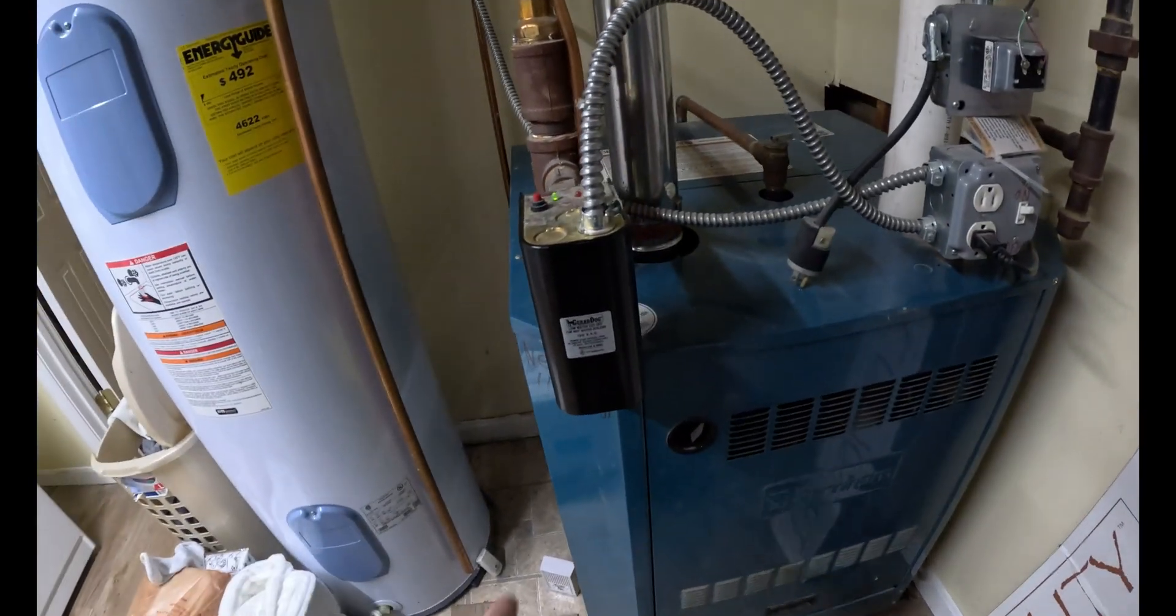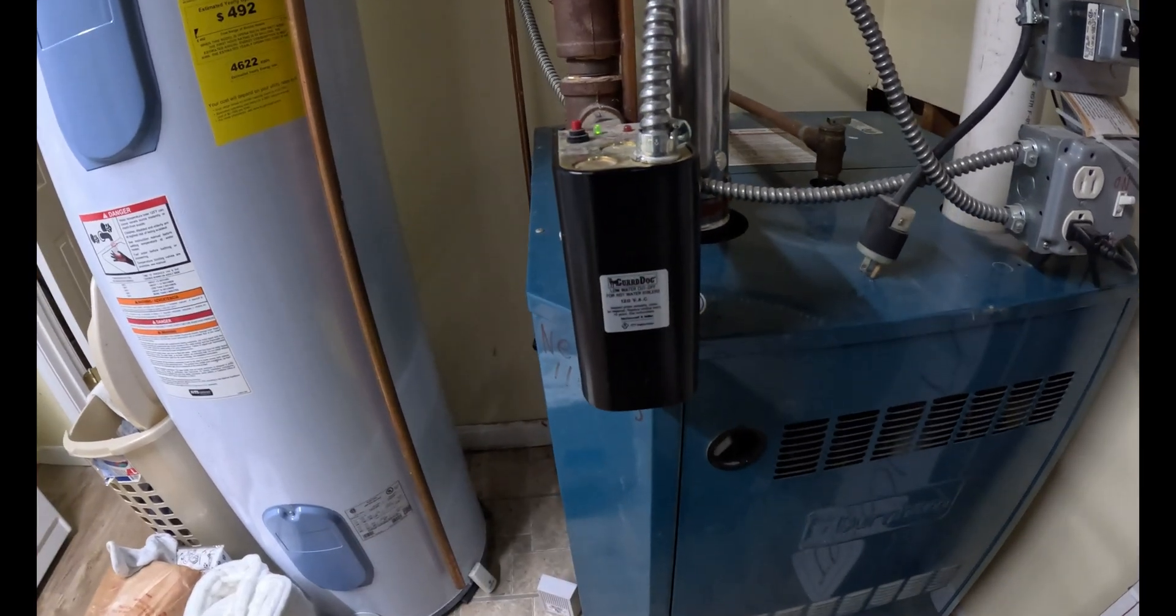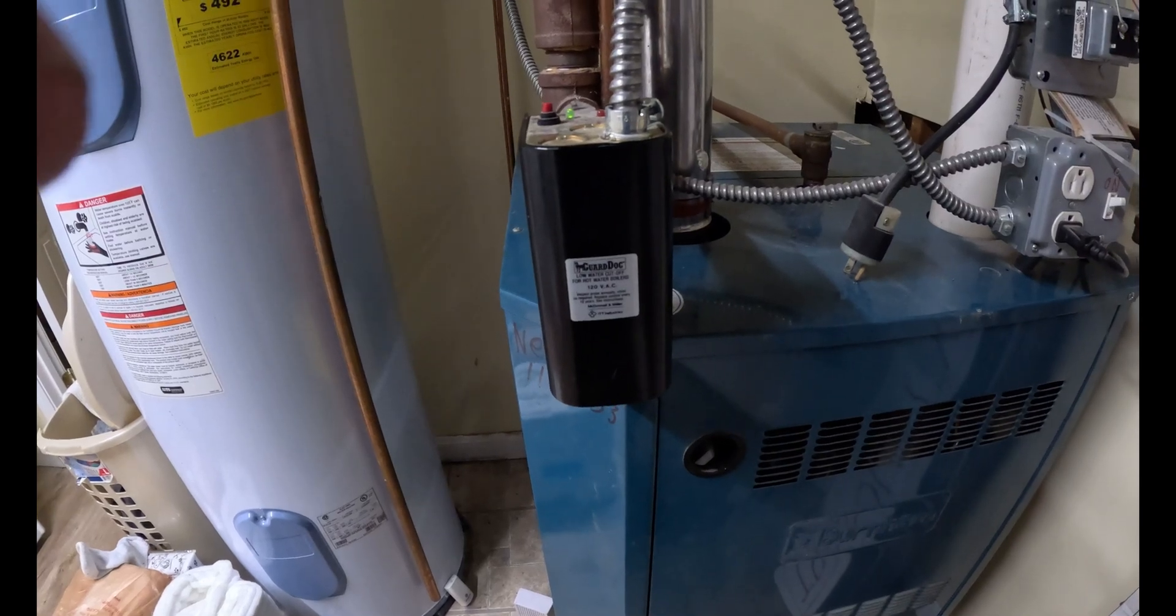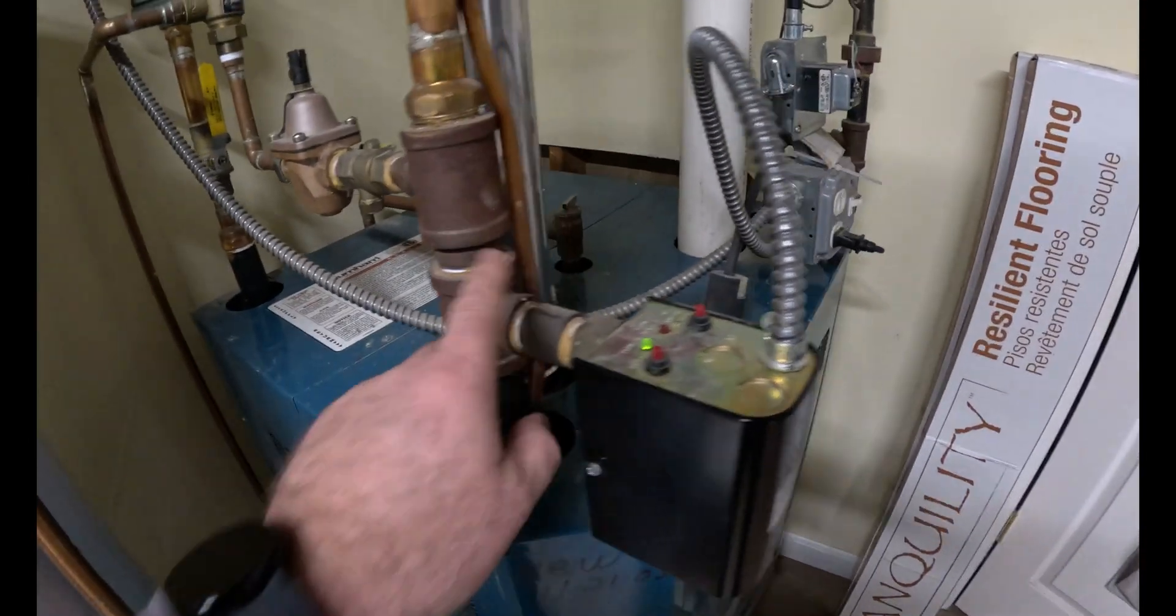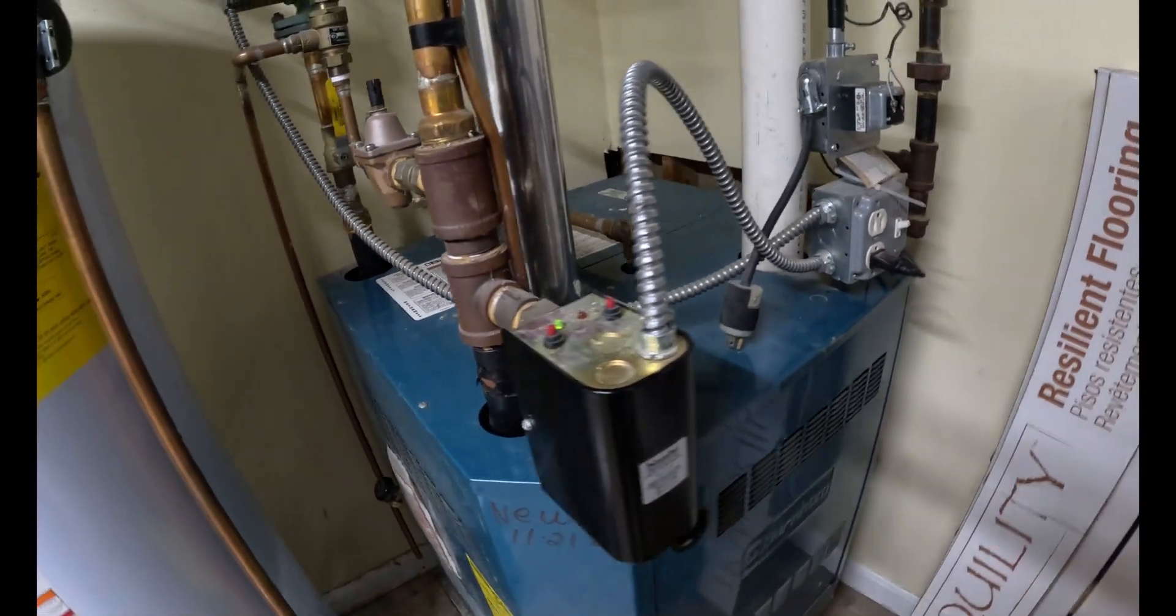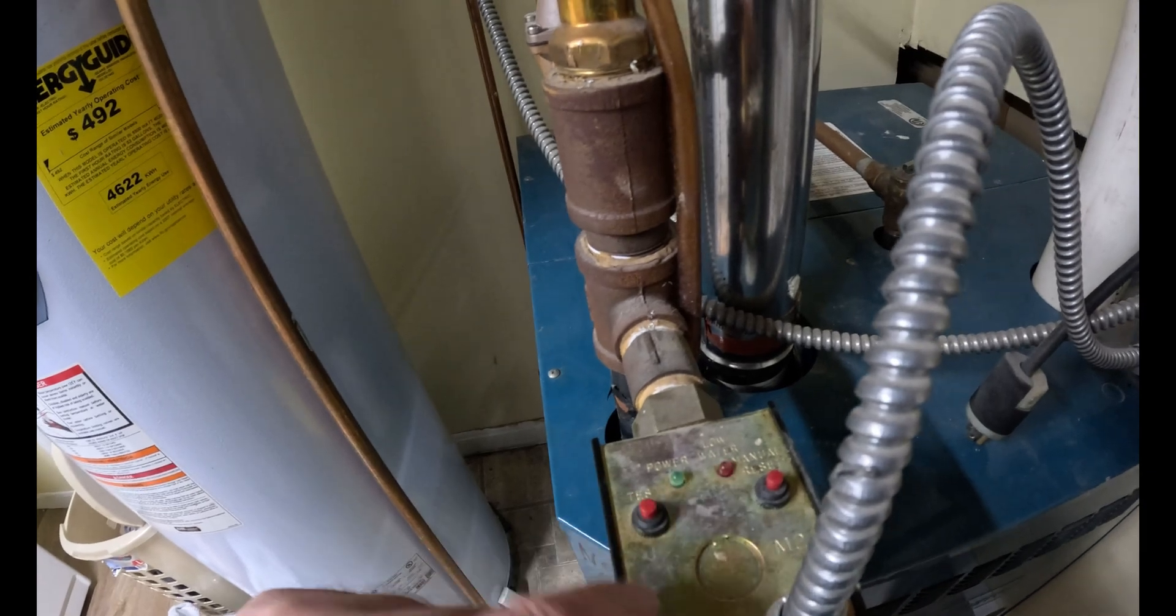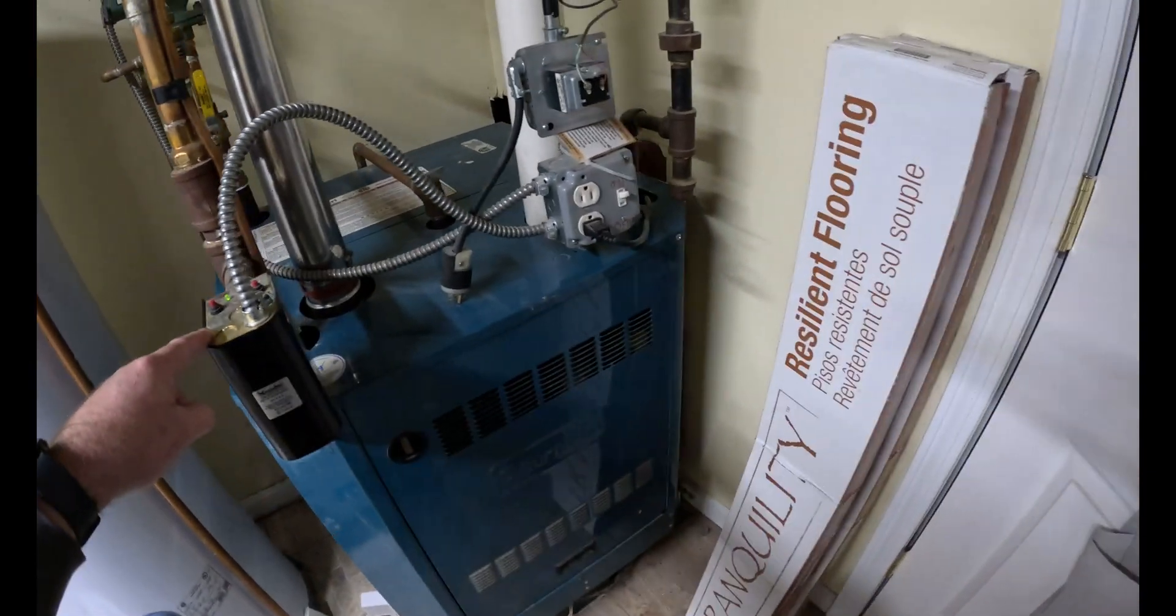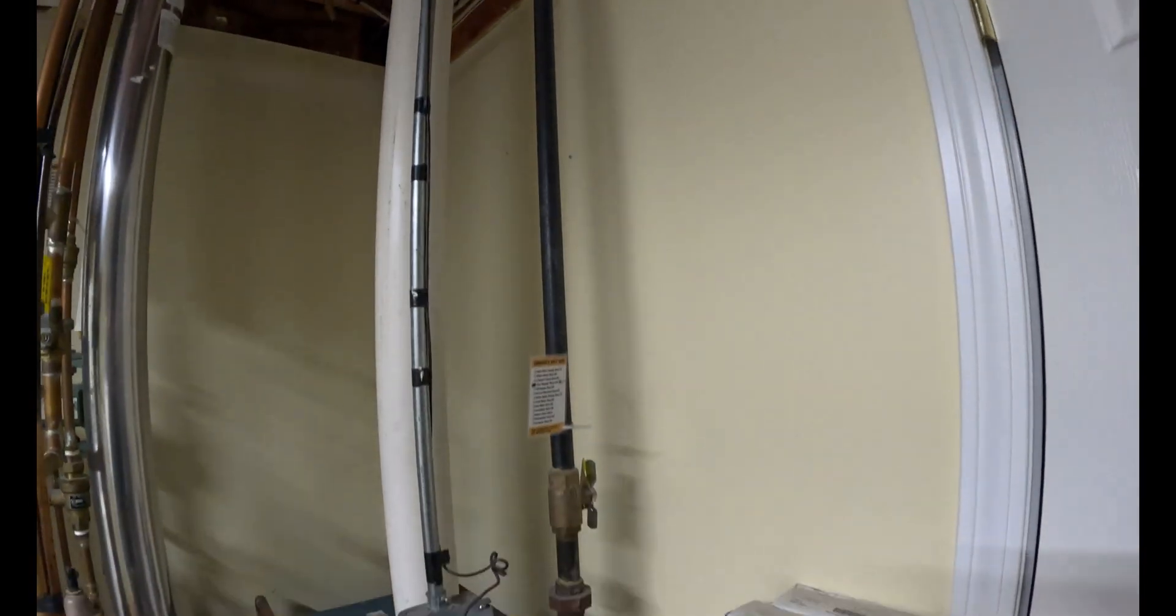Also on this boiler, we have this guy, which is usually a McDonnell but this is a different manufacturer, Cigar Dog low water cutoff. So if the water in the boiler ever gets below this point, the sensor is right here, ever gets below this point, it's going to shut the boiler off. It's a safety device. It does have a test mode which we can check.